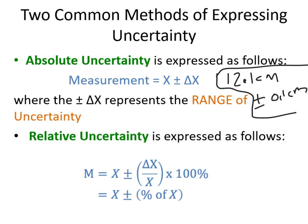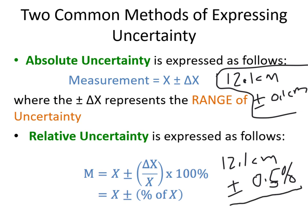When we talk about relative uncertainty, instead of x ± Δx we express it as x ± (Δx/x × 100%). So we might say 12.1 centimeters plus or minus 0.5%, expressing the range of uncertainty as a percentage rather than a raw number. That's the difference between absolute uncertainty and relative uncertainty.